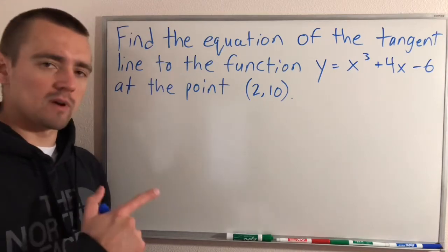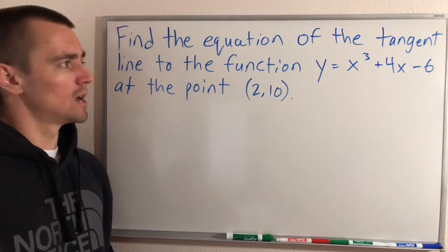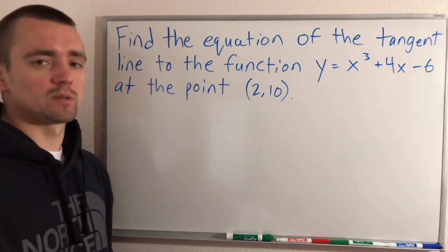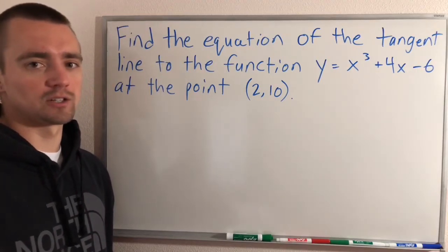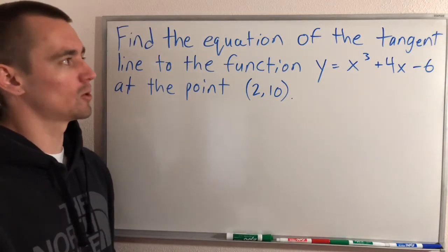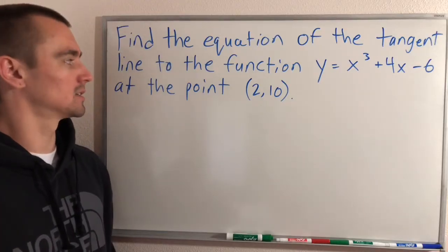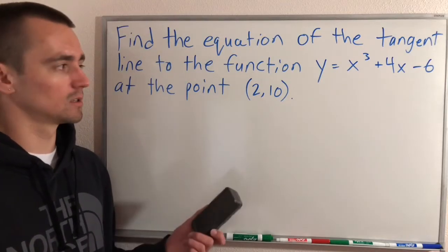Hey guys, Jake here, coming at you with another math lesson today. Here's the problem I'm going to be showing you how to do. It's a pretty similar process to any tangent line problem. Essentially, we're going to find the equation of the tangent line to the function y = x³ + 4x - 6 at the point (2, 10).